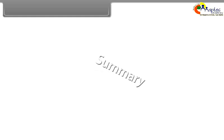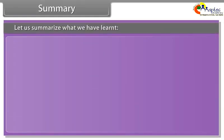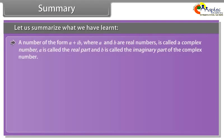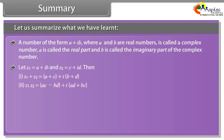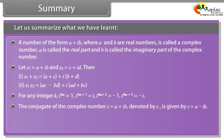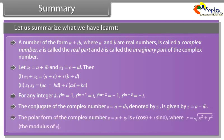Summary. A number of the form a plus b iota, where a and b are real numbers, is called a complex number. A is called the real part and b is called the imaginary part. For any integer k, the powers of iota follow a cyclic pattern. The conjugate of a complex number z is denoted z-bar. The polar form of a complex number is z equals r(cos theta plus iota sin theta), where r is the modulus and theta is the argument.